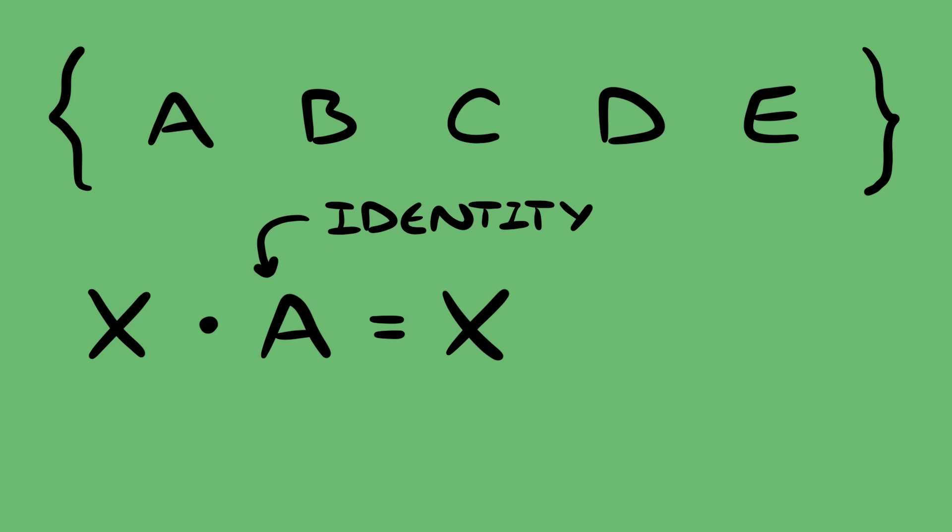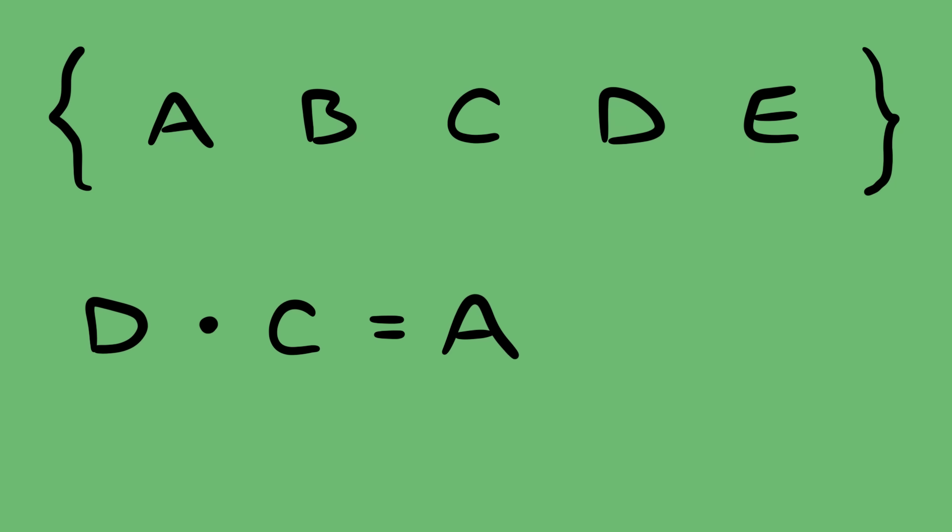You'll also notice that for every pose we can find another one that composes together to get back to A. Since A is the identity, we say that every element has an inverse.